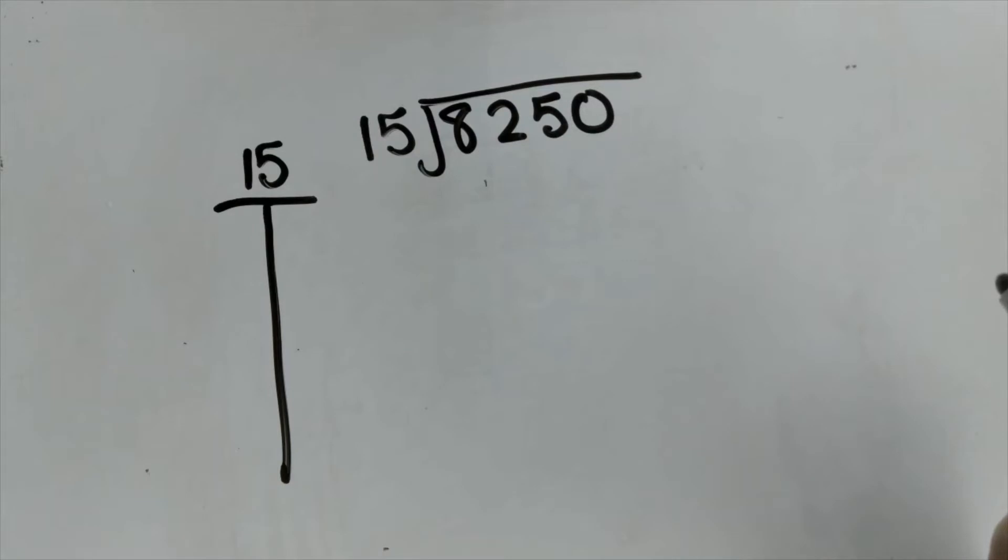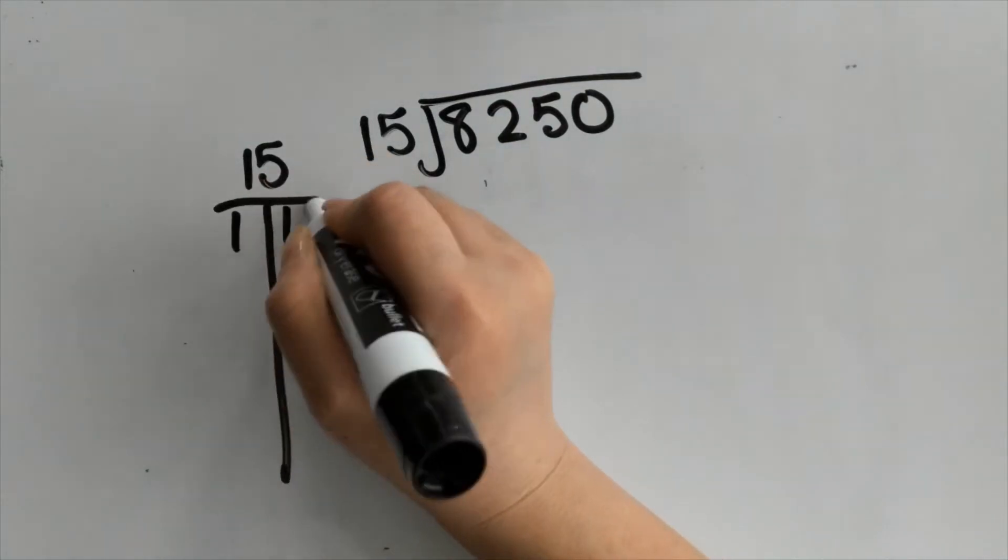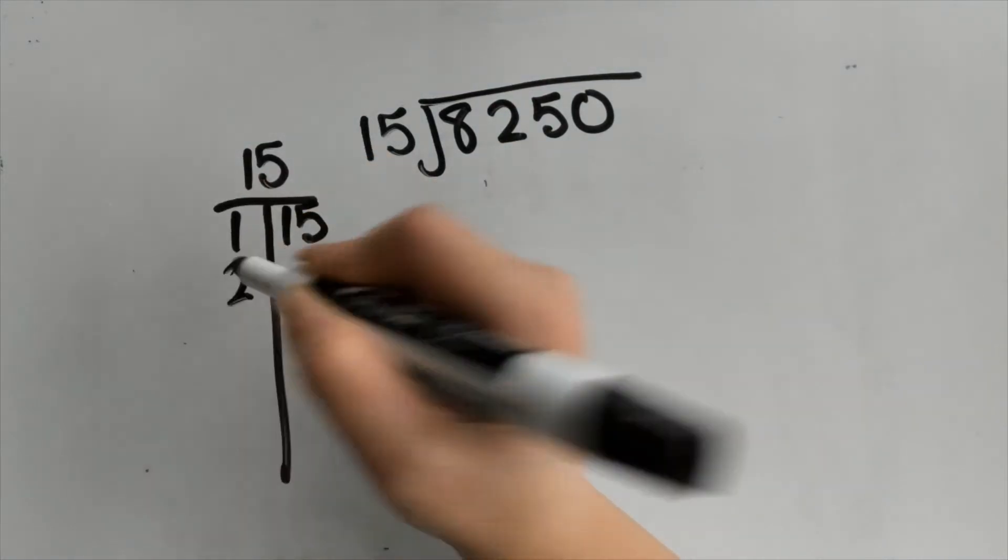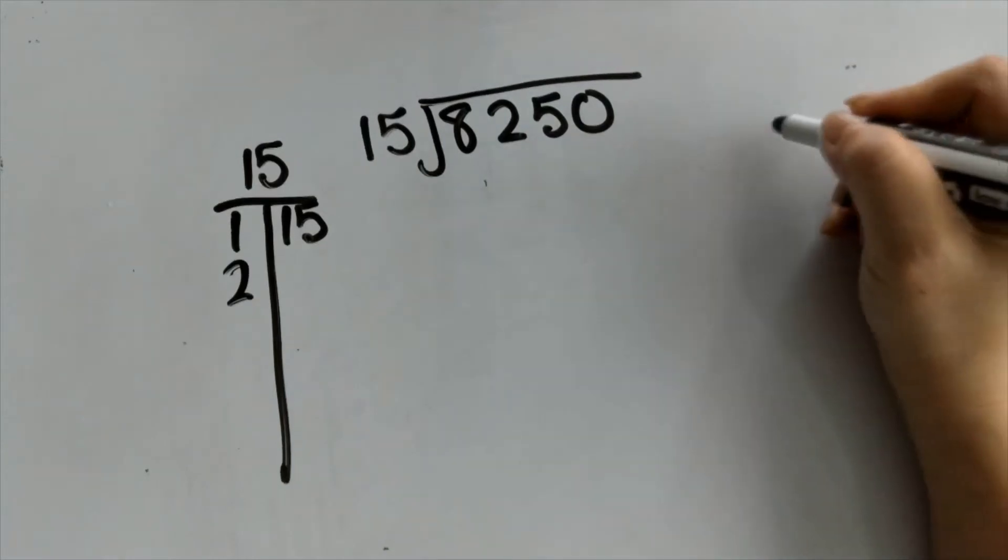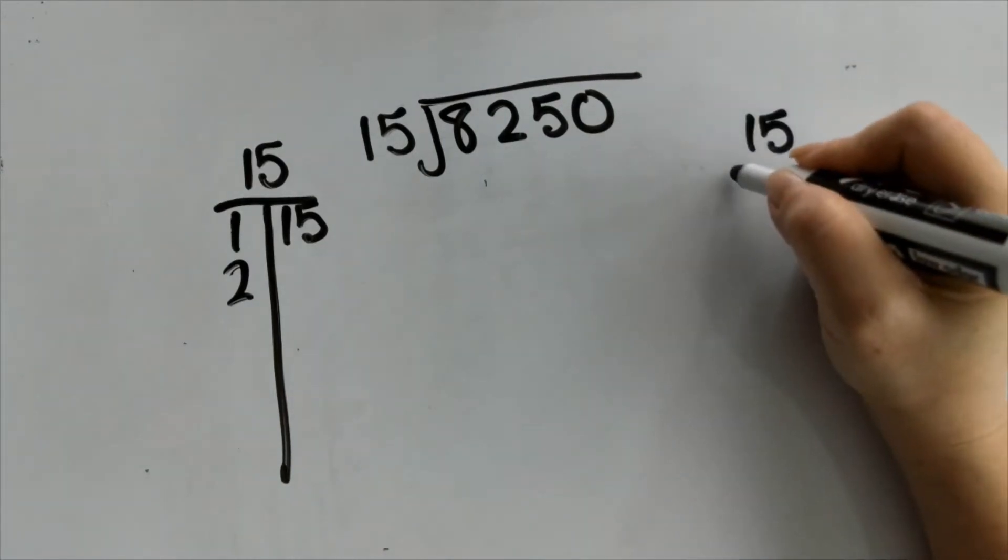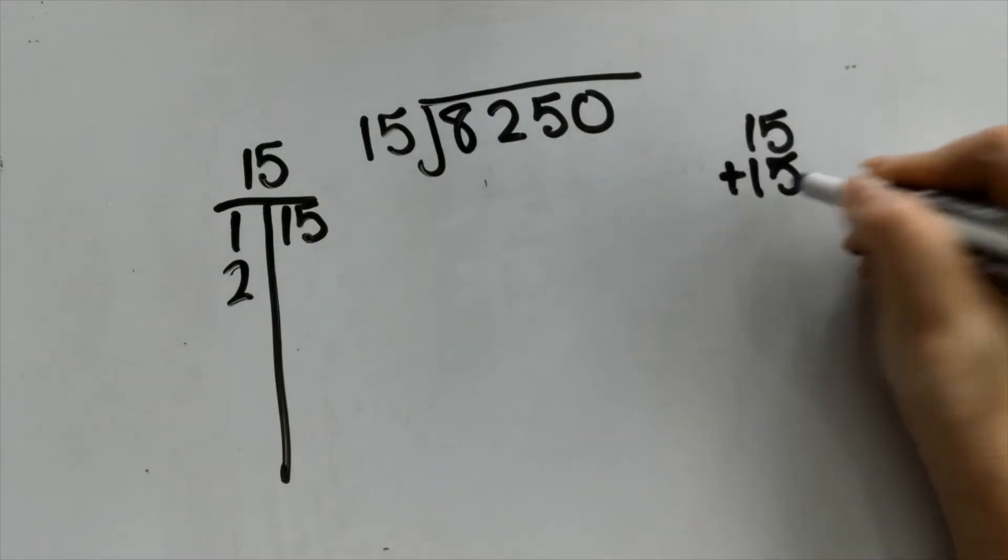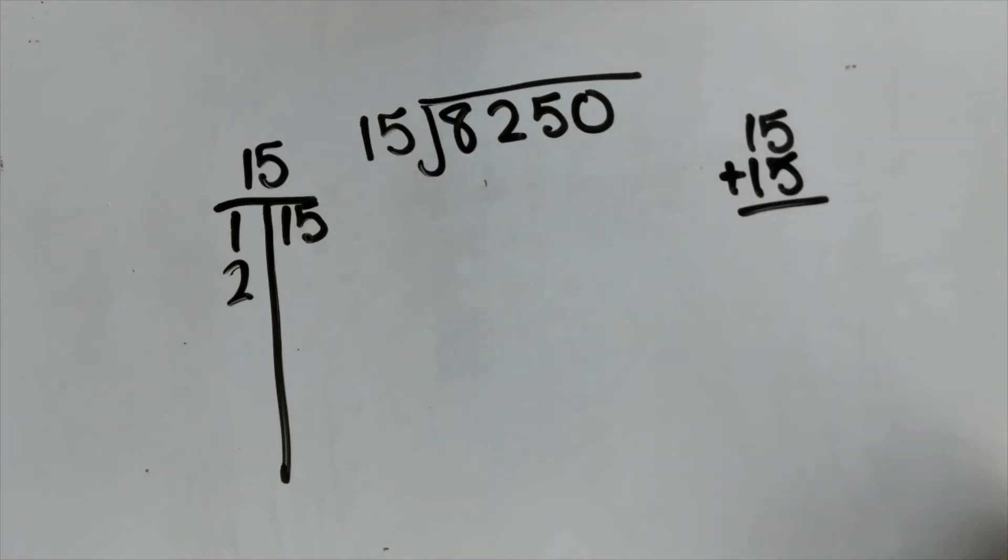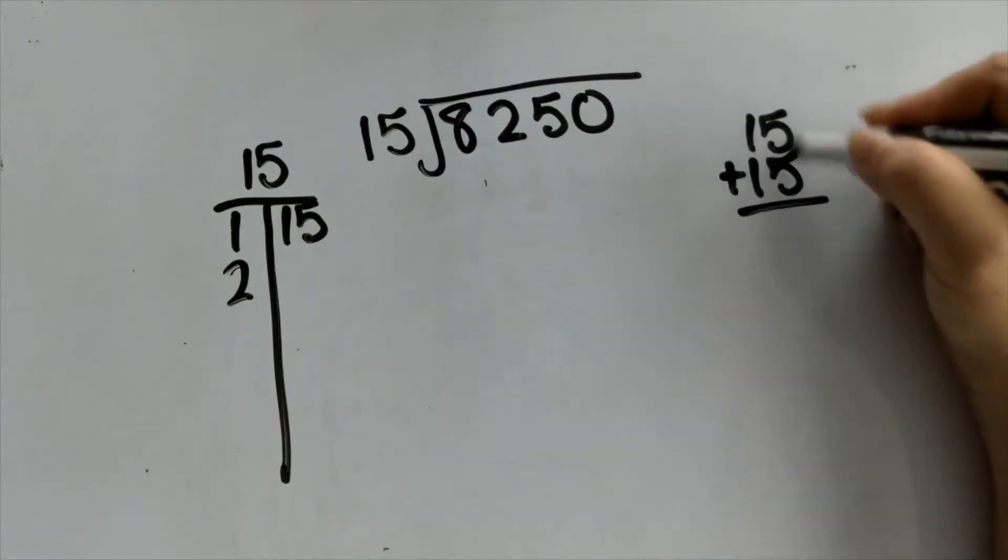What I'm essentially doing is creating a chart for all the fact families of 15. So first of all, 15 times 1 is 15. Now I'm going to find what 15 times 2 is. If I don't know that off the tip of my head, I can go over here and use repeated addition or I can also multiply. In this case I'm going to use repeated addition.